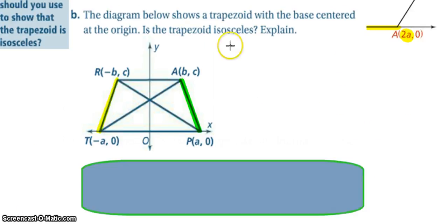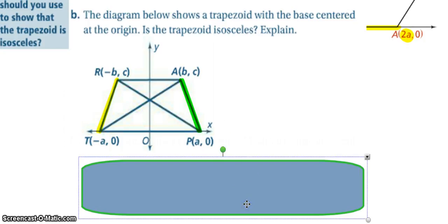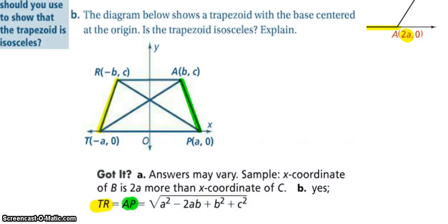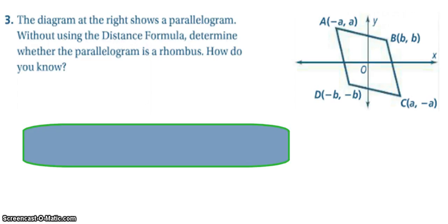All right, in part B we want to check out the trapezoid is isosceles, so to do that we want to compare the lengths of RT and AP, and we do that by utilizing the distance formula since it is a diagonal line. So you can see right there the math that goes behind to support that the distances are in fact equivalent, which means it is an isosceles trapezoid.